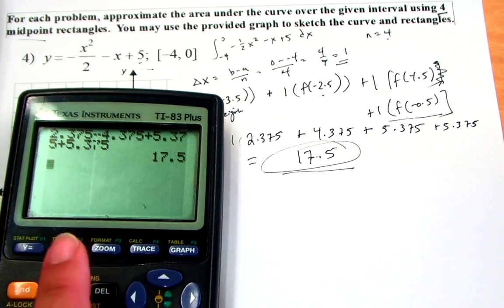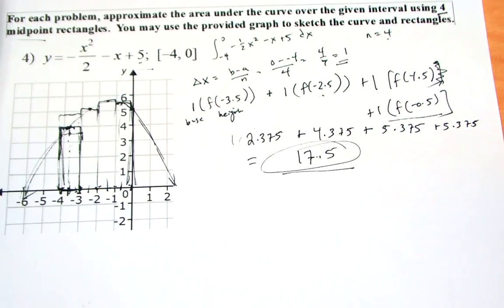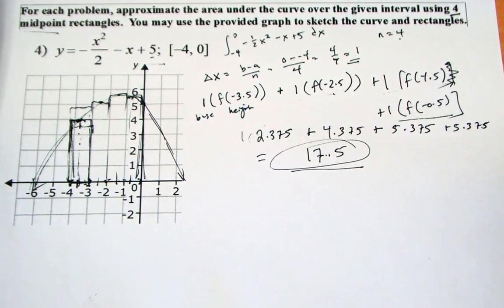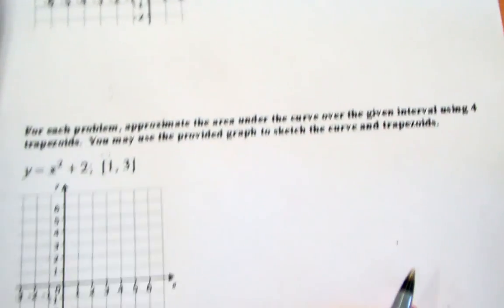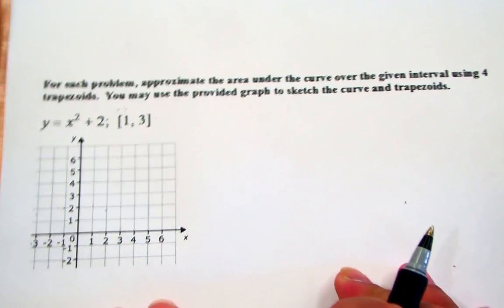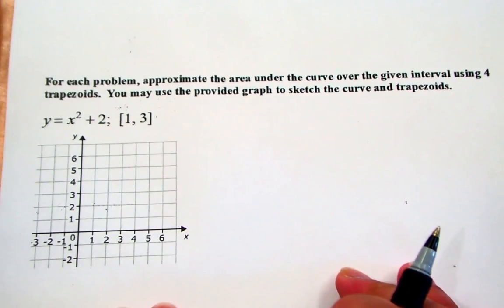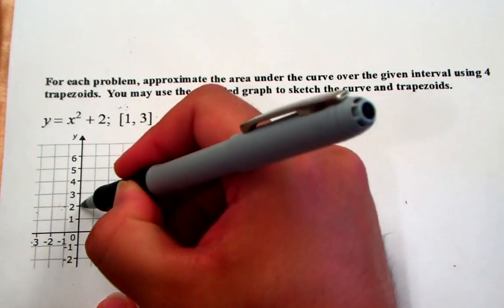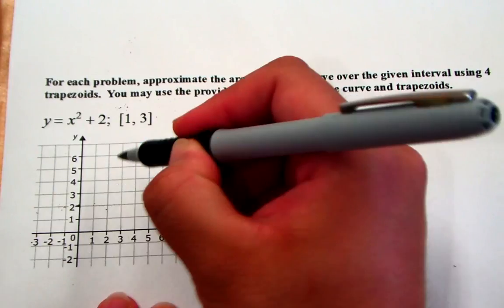Adding the four values together gives 17.5 — that's your approximate area using the midpoint rectangle method. Now let's take another example dealing with the trapezoid rule, which is a bit different. Instead of rectangles, we use trapezoids. Here the function is x squared plus 2, which is a little easier to graph — y-intercept at 2, plugging in 1 gives 3, plugging in 2 gives 6.